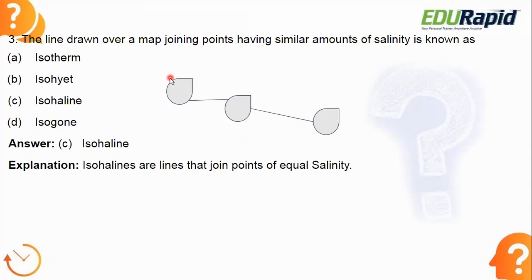Consider water bodies A, B, and C all having a similar amount of salinity. When you draw a line joining all these water bodies, that line is called an isoheline. 'Iso' means similar — we already know isotherm and isobars — and 'heline' relates to salinity. So isohalines are lines joining places of the same salinity.